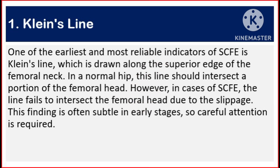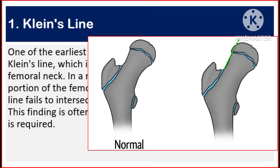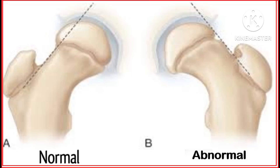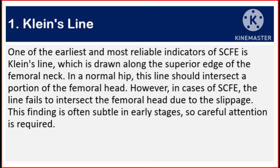Number one: Klein's line. One of the earliest and most reliable indicators of slipped capital femoral epiphysis is Klein's line, which is drawn along the superior edge of the femoral neck. In a normal hip, this line should intersect a portion of the femoral head. However, in cases of SCFE, the line fails to intersect the femoral head due to the slippage. This finding is often subtle in early stages, so careful attention is required.